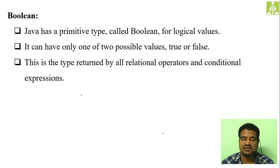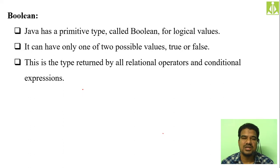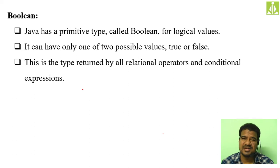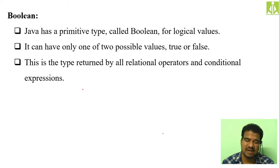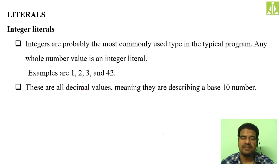Boolean type is the type returned by all relational operators and conditional expressions. Whenever you are doing comparisons or checking conditions, the result of those relational operations and condition checkings will give either true or false. To handle such true and false values in our programming we need a special type — that is the boolean type — which supports only two values: true and false.